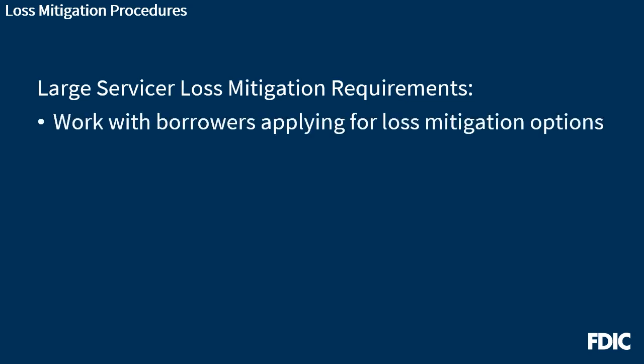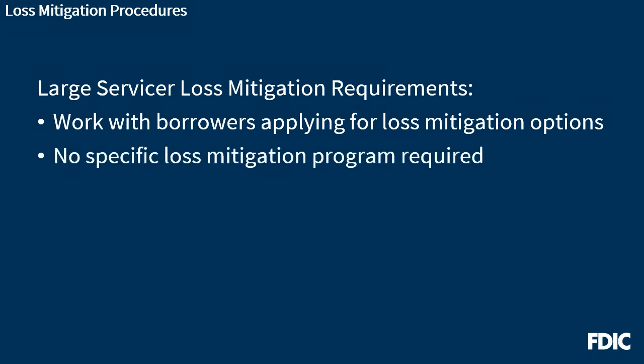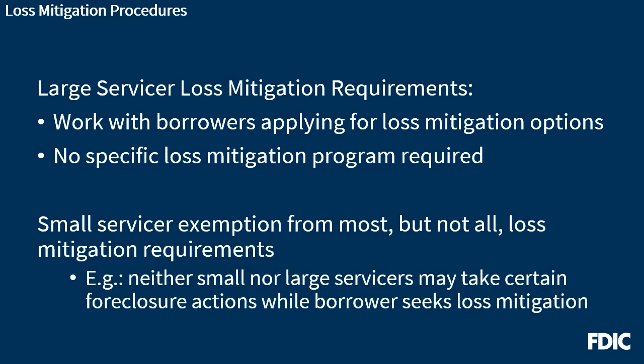Large servicers are required to work with borrowers applying for available loss mitigation options. Regulation X requires certain procedures to evaluate borrower applications and send certain notices to borrowers. The rules do not require servicers or owners of mortgage loans to offer any specific loss mitigation options and do not mandate eligibility criteria for those options. There is a small servicer exemption from most of the loss mitigation procedures. However, both small and large servicers are prohibited from initiating foreclosure referrals or moving for or conducting foreclosure sales while a borrower seeks loan modification or other loss mitigation options. Further, large servicers are responsible for violations caused by a foreclosure counsel's action or inaction. You can find more information relating to the loss mitigation rules in the regulations and official interpretations.